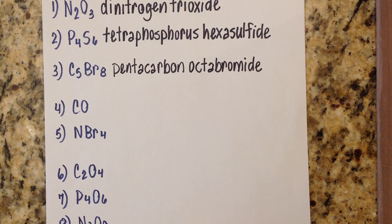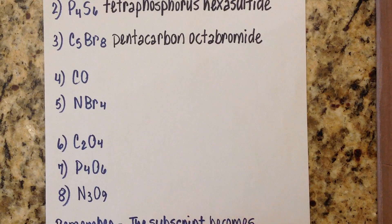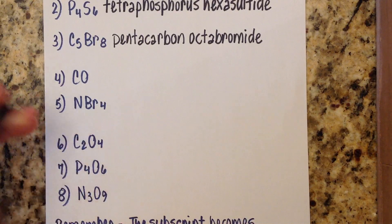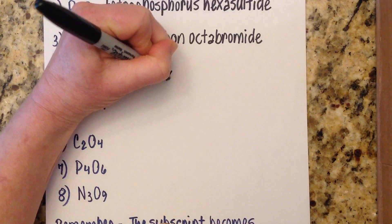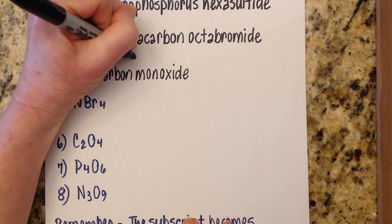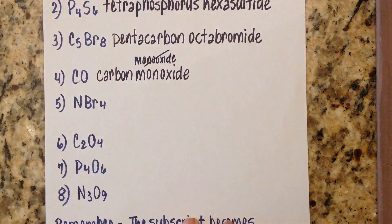I bet you're shaking your head saying, I had no idea it was that easy. Number four: I have one carbon and one oxygen. Remember the exception — if the first element is one, don't write mono. But if the second one is one, you do write mono. So CO is carbon monoxide. And because mono ends with O and oxide starts with O, we drop one O — so it's monoxide, not monooxide.